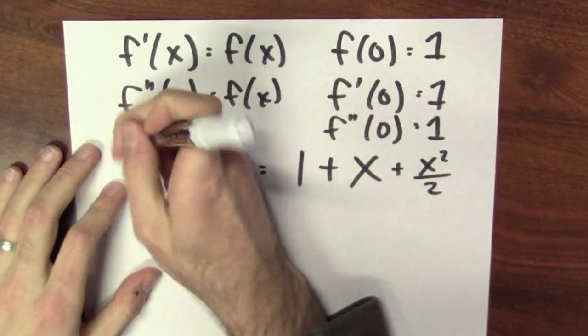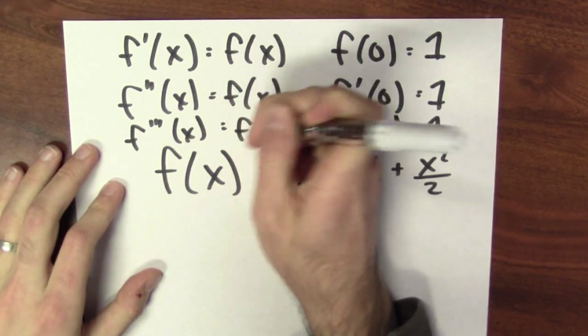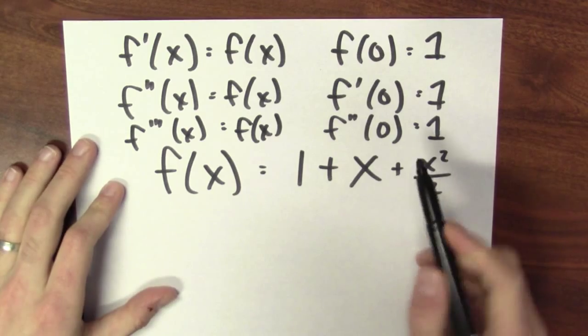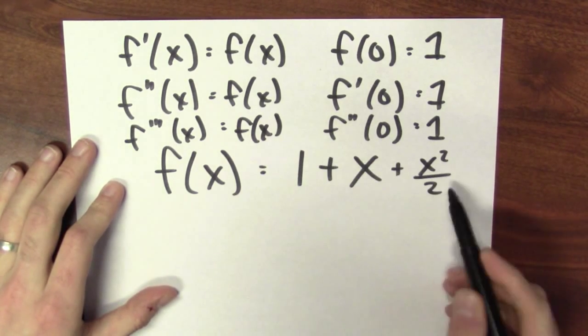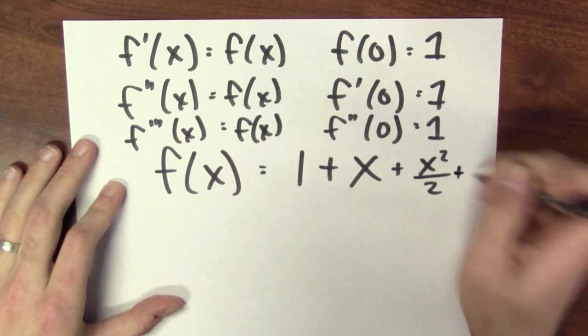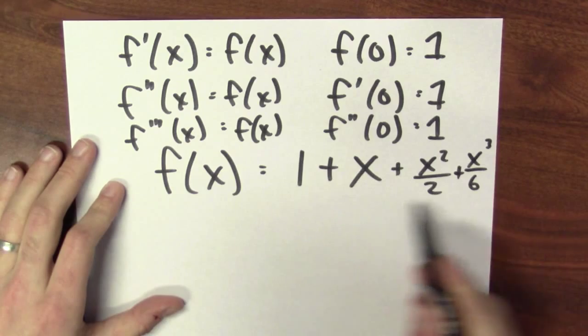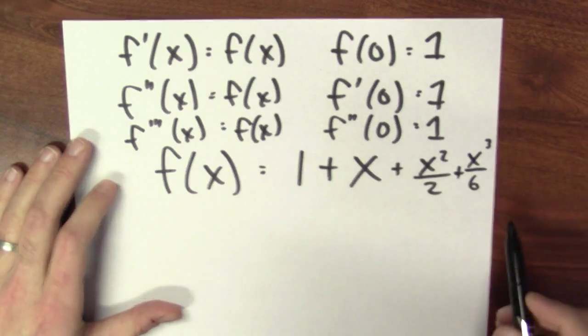Since f is its own derivative, the third derivative of f must also be f. If the third derivative of f equals f, that means the third derivative of f at 0 is equal to 1. But this thing's third derivative is just 0. If I add on x cubed over 6, now if I take the third derivative of this function and plug in 0, I get out 1.